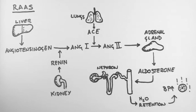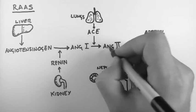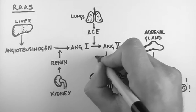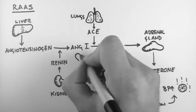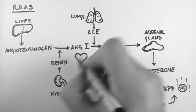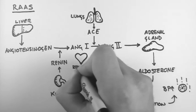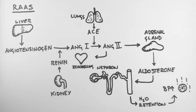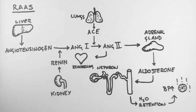One other important thing about angiotensin 2: it appears to be a factor in the inappropriate remodeling of the heart after a heart attack, and this can cause significant morbidity and mortality in heart attack patients.